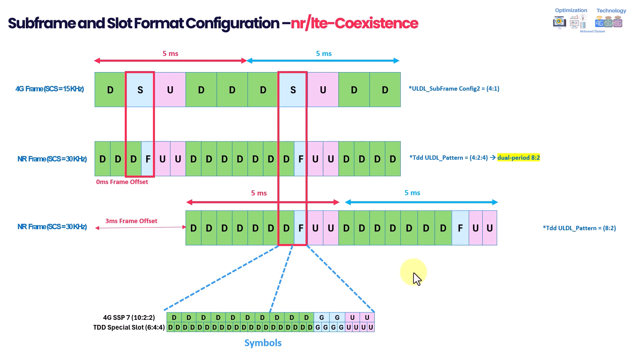This alignment is mainly required whenever you are using the same frequency for both 4G and 5G. If you are using different frequencies — for example, 4G TDD on 2.6 GHz and NR on 3.7 GHz — then this kind of frame alignment may not really be required.